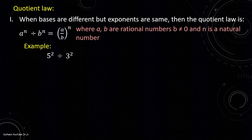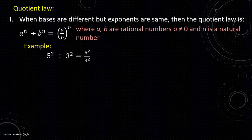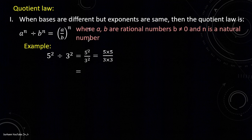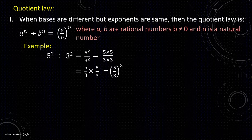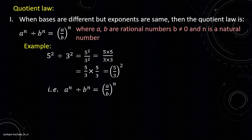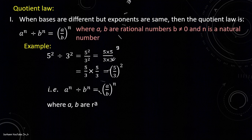For example, 5 to the power 2 divided by 3 to the power 2. Here you may see that 5 and 3 are different bases but their exponent 2 is the same for both. You can write this as 5 to the power 2 upon 3 to the power 2. 5 will be multiplied 2 times and 3 will also be multiplied 2 times. You can write and solve this separately. So when two different bases are divided and their exponents are the same, the exponent remains the same.